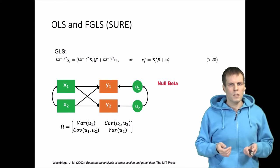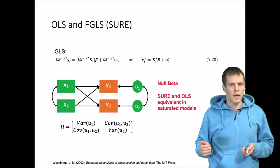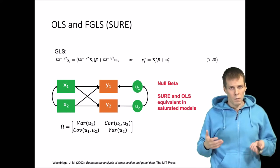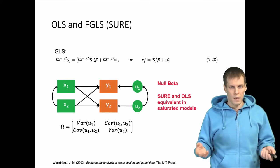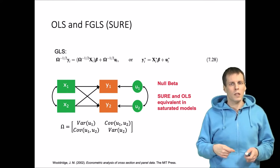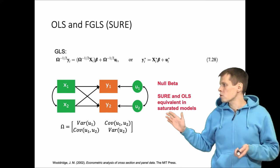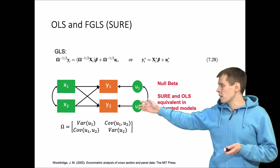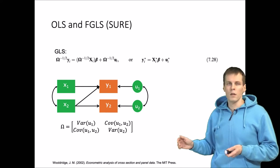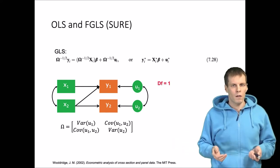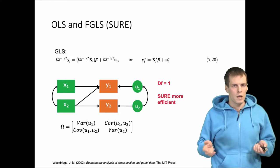Another thing to understand about this technique is that when the model is just identified, it is equivalent to OLS regression. Because the techniques are equivalent, they produce the exact same result and there is no statistical reason to use one over the other. If the model is over identified, for example if we take out this path, we gain one degree of freedom and in that case the seemingly unrelated regression estimation is more efficient.